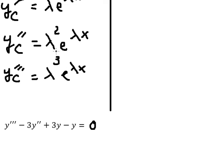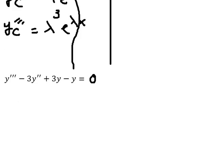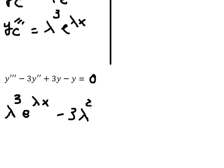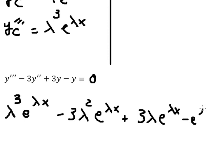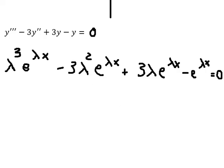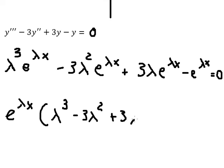We substitute each term in: this one here, this one here, this one here, and this one here. So we have λ³ e^(λx) minus 3λ² e^(λx) plus 3λ e^(λx) minus e^(λx). Now we factor out e^(λx), giving us λ³ minus 3λ² plus 3λ minus 1.